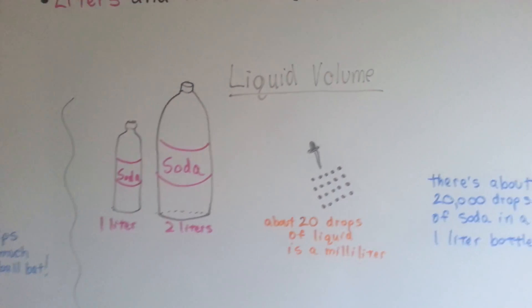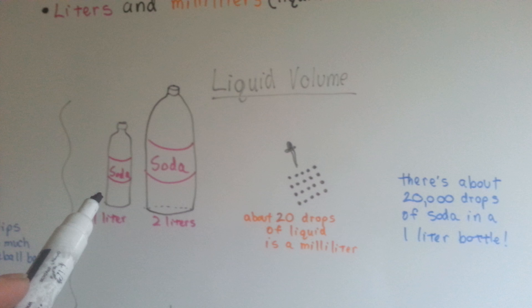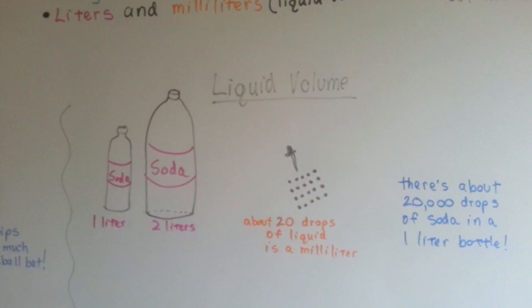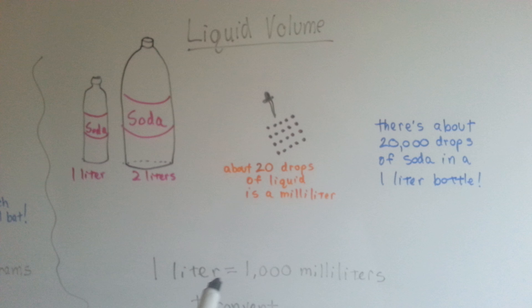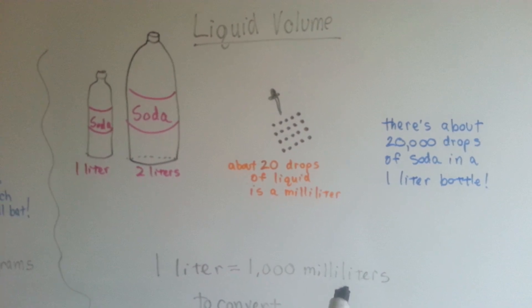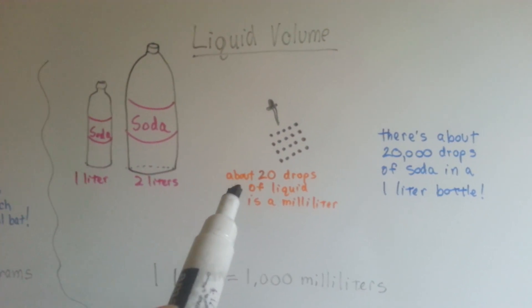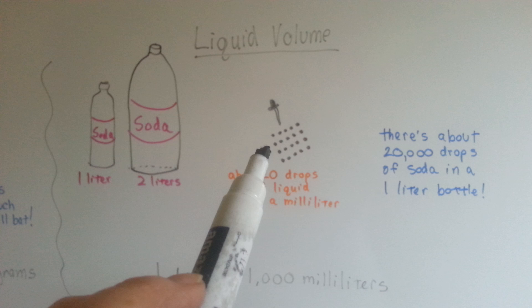For liquid volume, soda pop comes in a one liter bottle or a two liter bottle. A one liter bottle is equal to one thousand milliliters. There's about twenty drops of liquid in one milliliter.